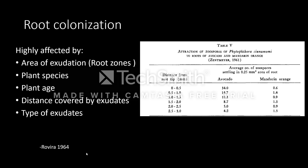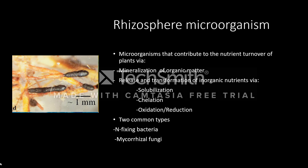In the table, we see a comparison of the attracted zoospores between avocado and mandarin oranges. In avocado, the number of zoospores decreases as you go further away from the root tip. Meanwhile, in mandarin oranges, there are certain areas with higher and certain areas with lower accumulations of zoospores.